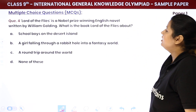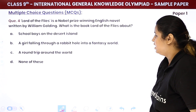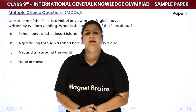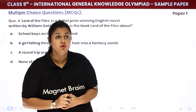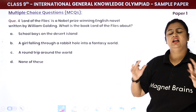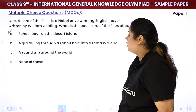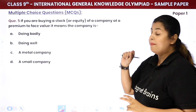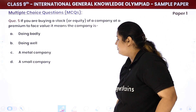Now let's come to the fourth one. Lord of the Flies is a Nobel Prize-winning English novel by William Golding. The options include: a girl falling through a rabbit hole into a fantasy world, a round trip around the world, all school boys on a desert island. This novel is set during wartime — a plane carrying British boys is shot down and crashes on a tropical deserted island, where a group of school boys are stranded. The answer is: school boys on the desert island.